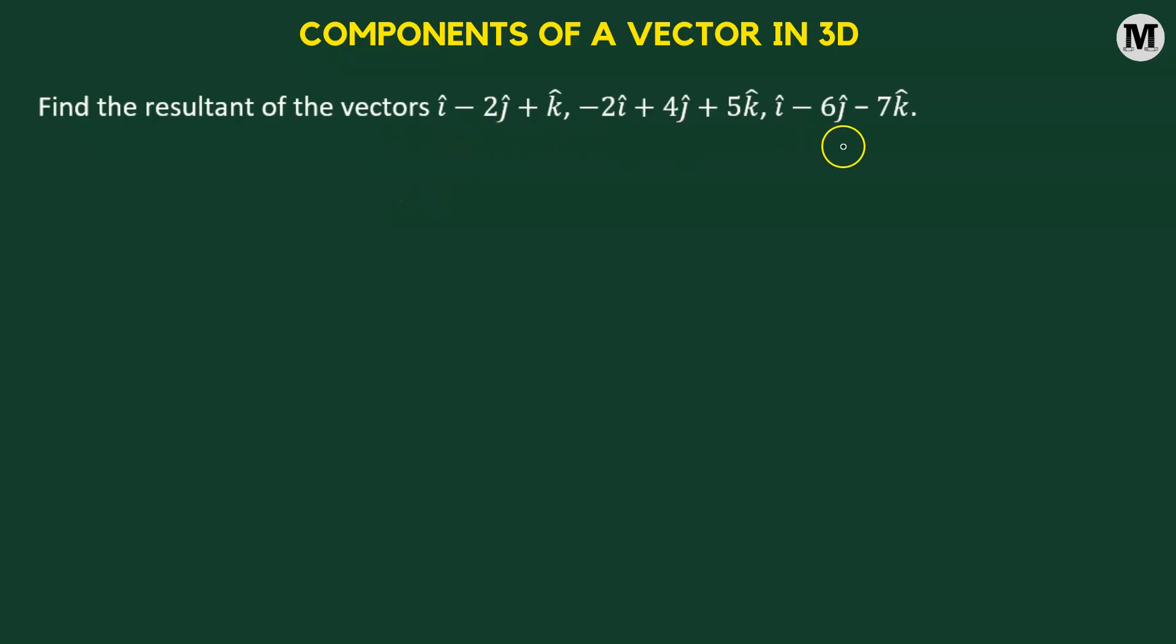Find the resultant of the three vectors. Let us begin. Now what we'll do, we'll name the three vectors as A vector